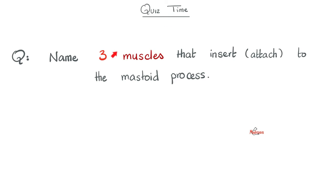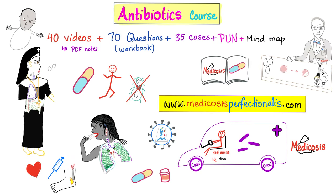Quiz time! Can you name three muscles that insert to, or are attached to, your mastoid process, which is part of your temporal bone? Let me know the answer in the comment section.